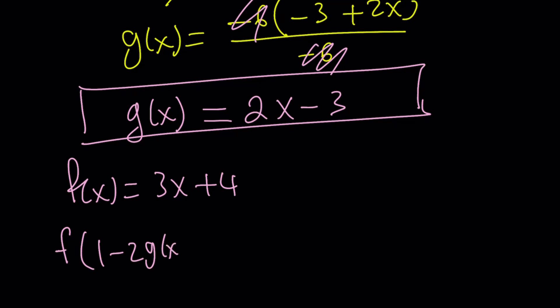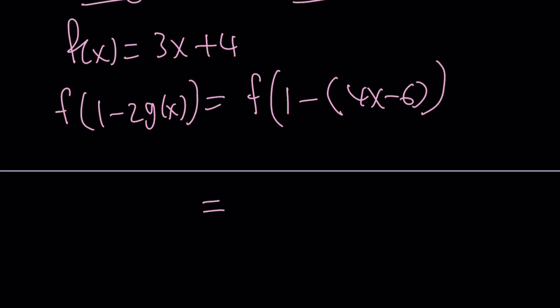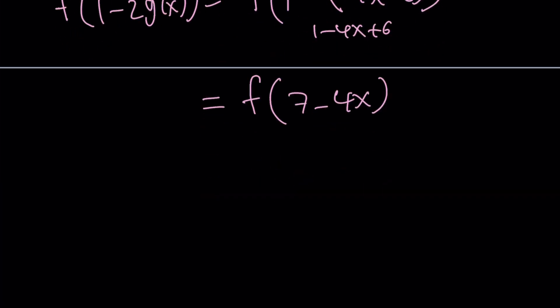First of all, what is g of x? This one. Double it and subtract from 1. Great. So if you double it, you get 4x minus 6. And I have to subtract it from 1. So it's going to give me f of 1 minus 4x plus 6. But that's just 7 minus 4x. You could also write it as negative 4x plus 7.